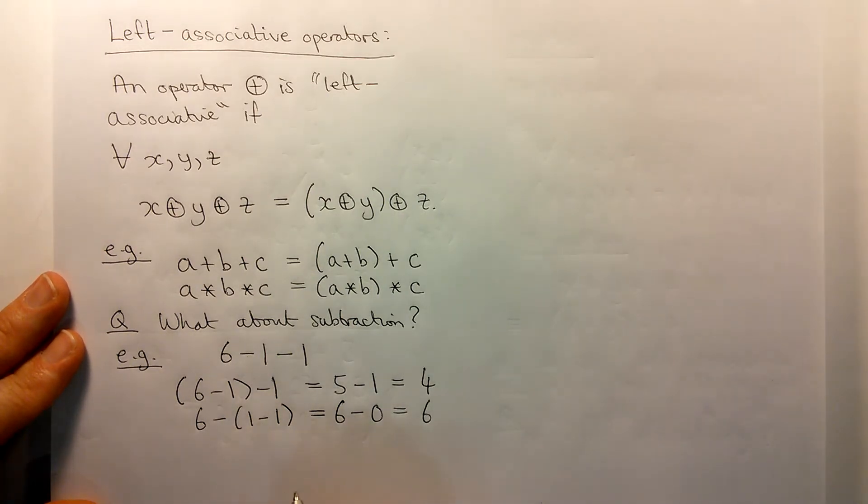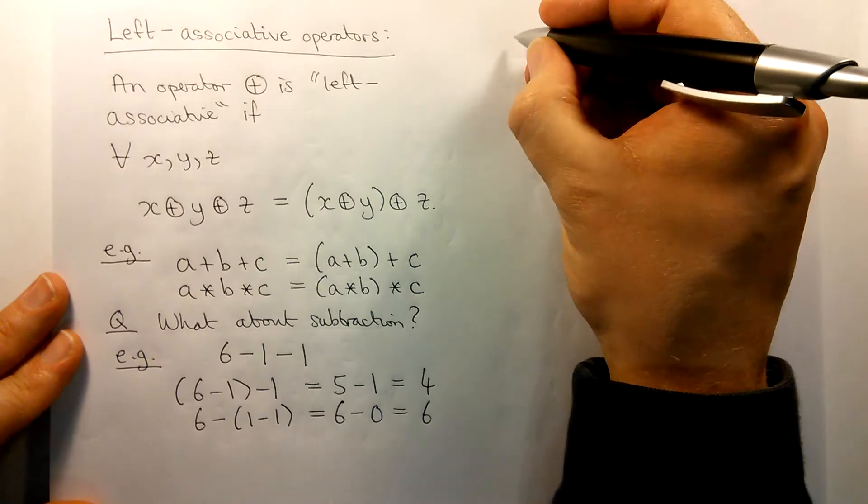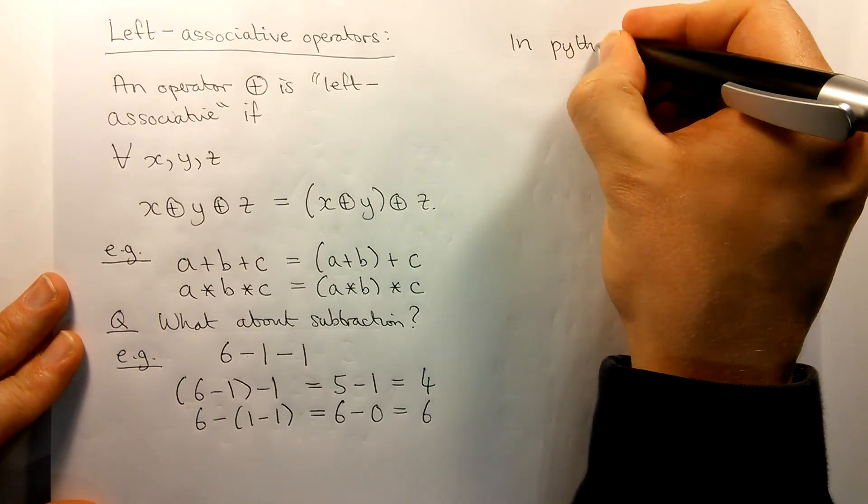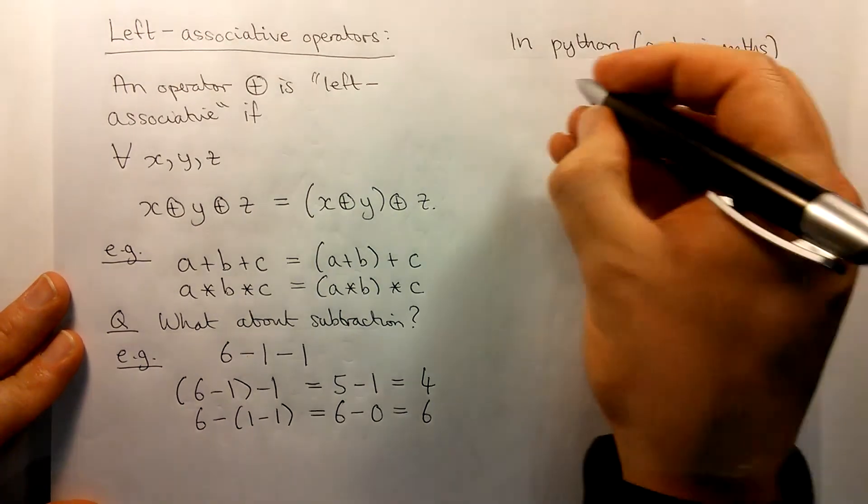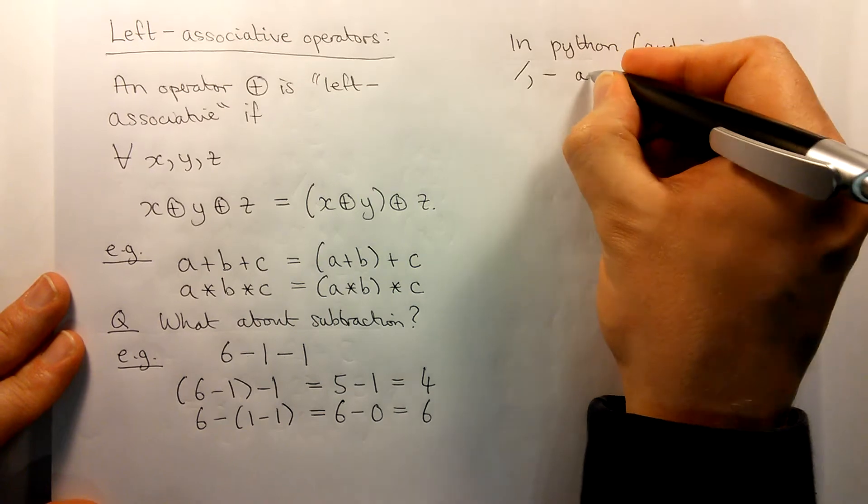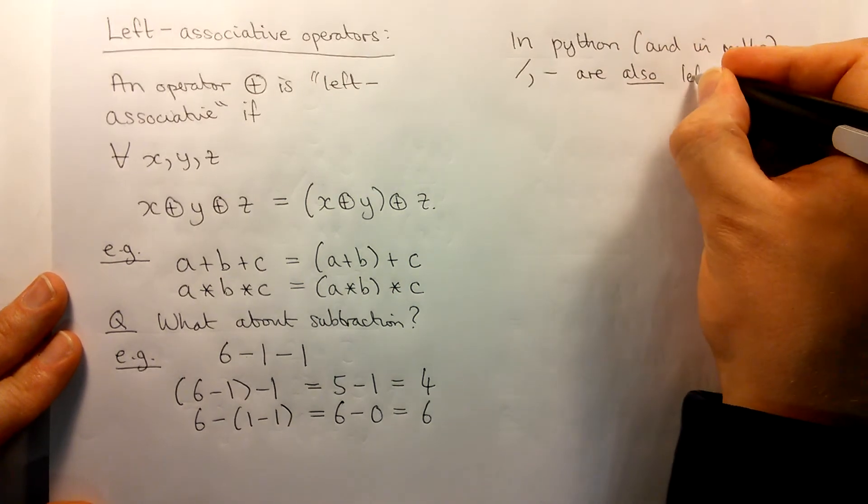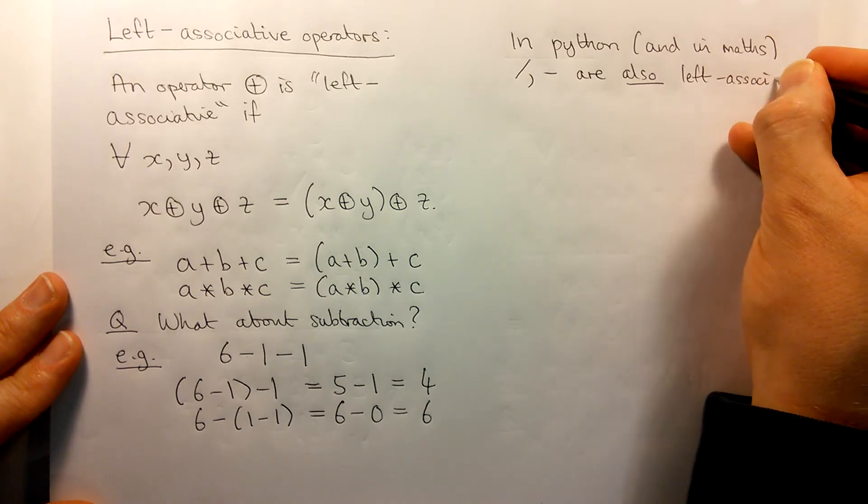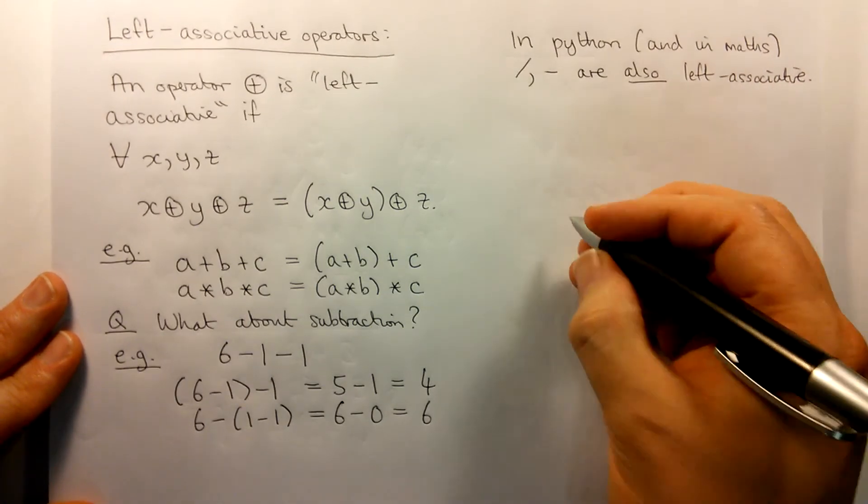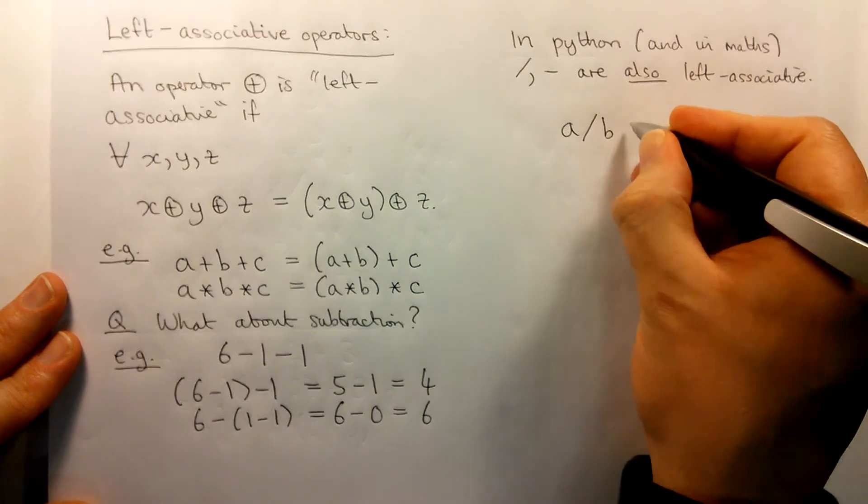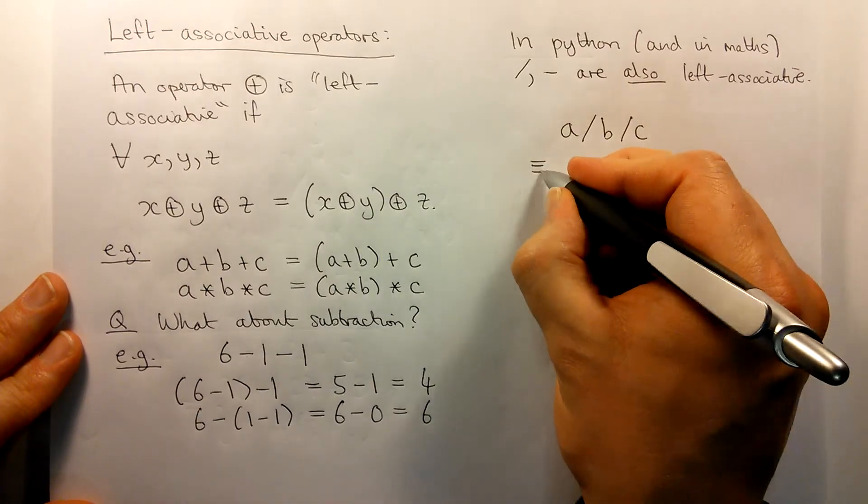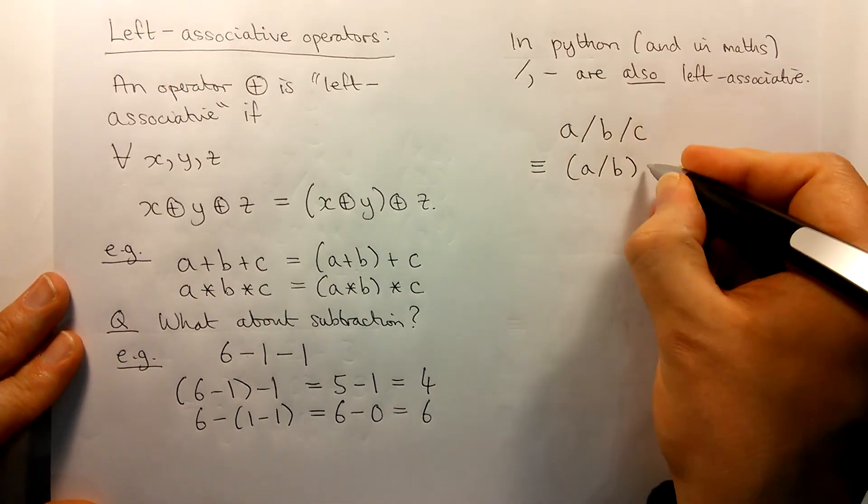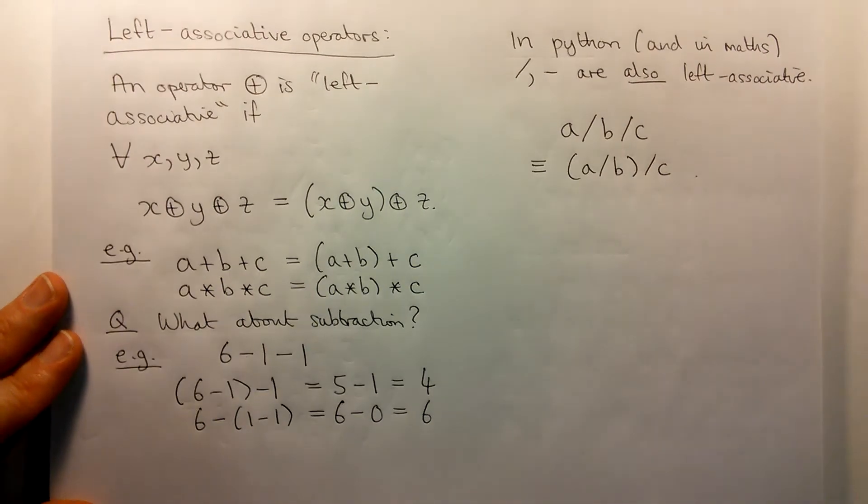Well Python treats subtraction and division as left associative. So we always work from left to right. So if we have three operators chained together using division, then what's meant by that in ordinary mathematics and in Python is that we perform the leftmost one first and then we work to the right.